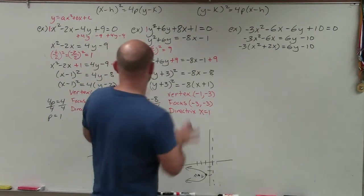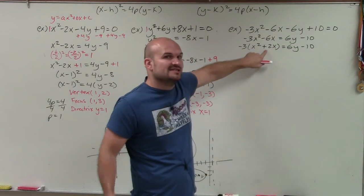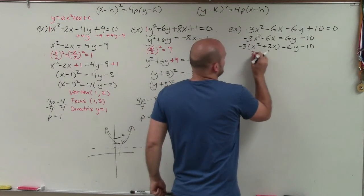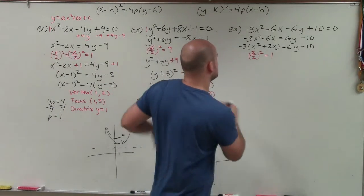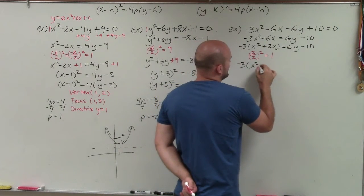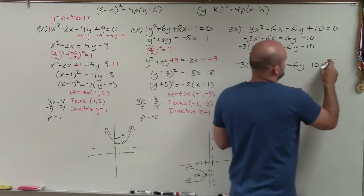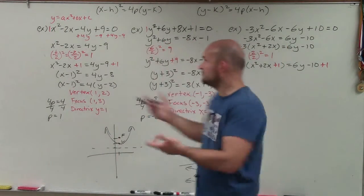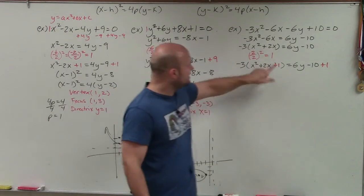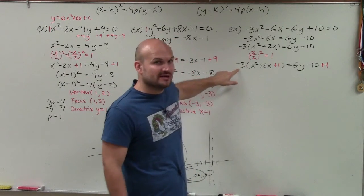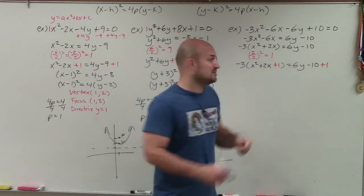Now I can complete the square using (b/2)². Note: use the b from the factored form, which is 2, not the original −6. So (2/2)² = 1² = 1. I add 1 to both sides — but be careful: I'm adding 1 inside the parentheses, which is being multiplied by negative 3. So using the properties of equality, I must add −3 times 1, i.e., negative 3, to the other side as well.